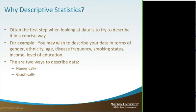So if I just told you the average blood pressure was 120 over 80, or we had a 10-point drop in blood pressure, you would say you need more information — the age, the ethnicity — to really be able to understand these data. That's really why we do descriptive statistics.